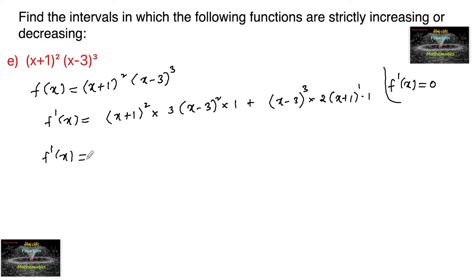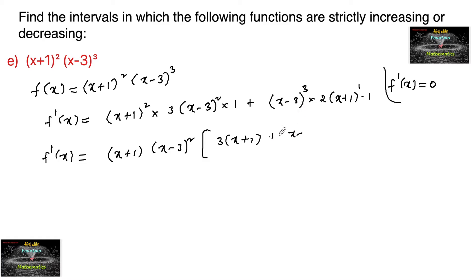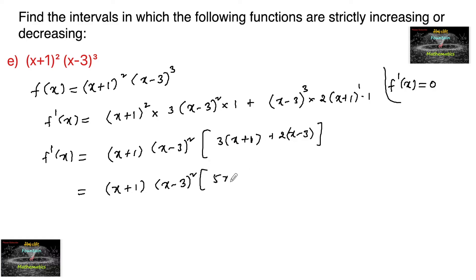So I can take (x+1) and (x−3)² out as common factors. Inside the bracket: 3(x+1) + 2(x−3). Expanding: 3x + 3 + 2x − 6, which gives 5x − 3. So f'(x) = (x+1) · (x−3)² · (5x−3).